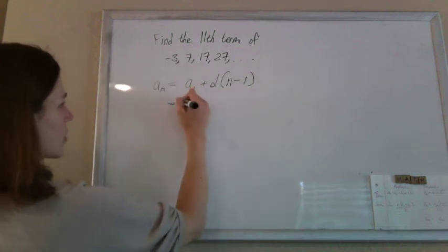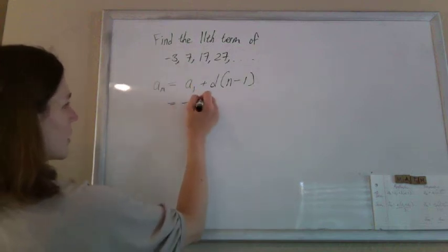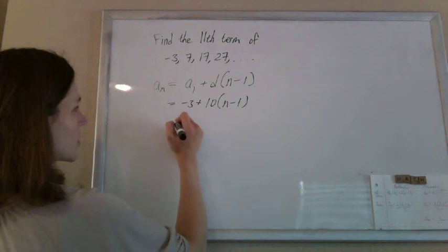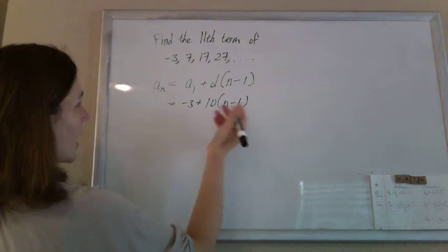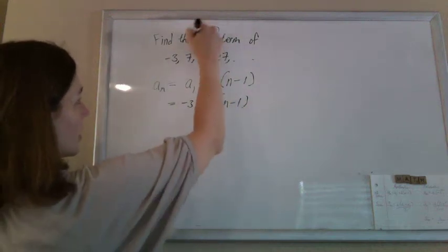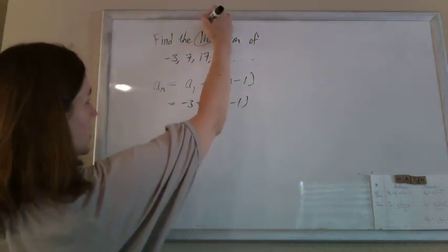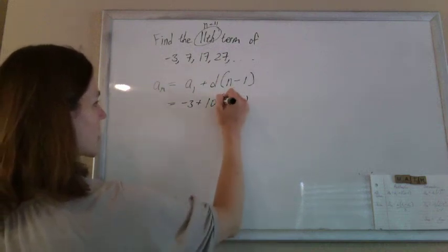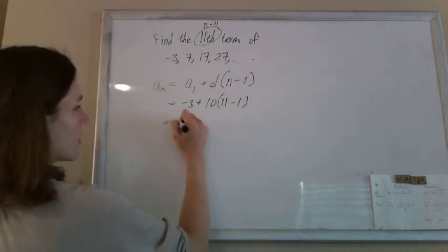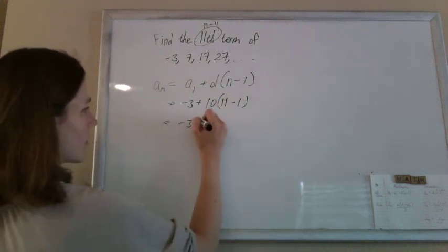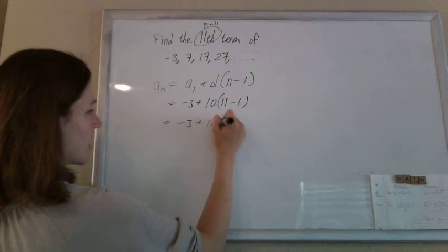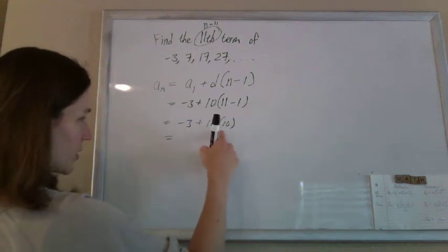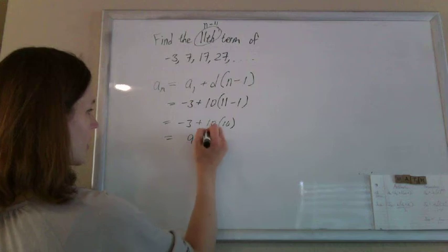So your first term is negative 3. The common difference is 10, times n minus 1. In this case, n is 11 — the 11th term means n is 11 — so I'll put that in right away. That's negative 3 plus 10 times 10, which is negative 3 plus 100, which is 97.